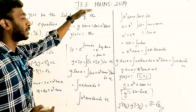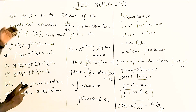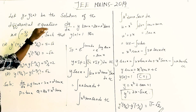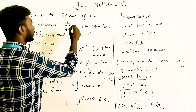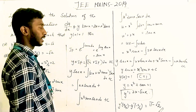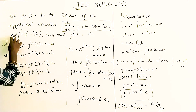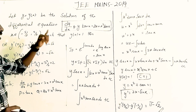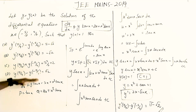Hi students, today we are going to see a JEE 2019 differential equation problem. Let y = y(x) be the solution of the differential equation dy/dx + y·tan x = 2x + x²·tan x, where x belongs to (-π/2, +π/2), such that y(0) = 1. Then which option is correct? They are giving 4 options.